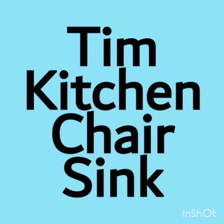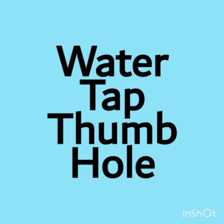Now the first word you have to underline is Water, because water is the name of a thing. Tap — tap is also a thing. Thumb — thumb is also a thing. Hole — hole is also a thing. So water, tap, thumb, hole — these four are the nouns. We have found already eight nouns.